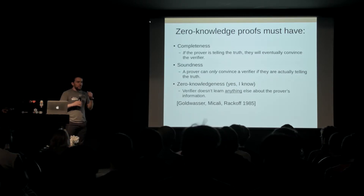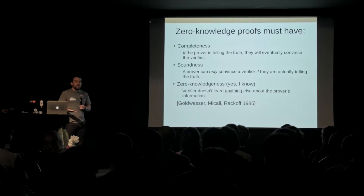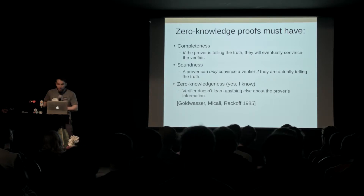Essentially, it's the least amount of information you could possibly leak — just that one bit. If you were leaking less information, it would go back to being a zero-usefulness proof.